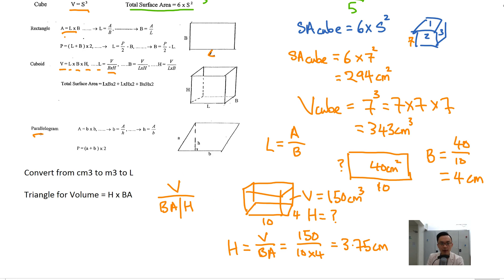Last one: the area of a parallelogram is base times height. Remember, the base B is this entire bottom length. The height must be the perpendicular height — the 90-degree measurement. This slanted side is not the height. So do not multiply B by the slanted side A — it's B times the perpendicular height H. You need to find the perpendicular height of the parallelogram.